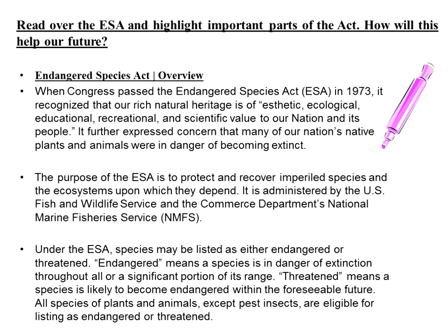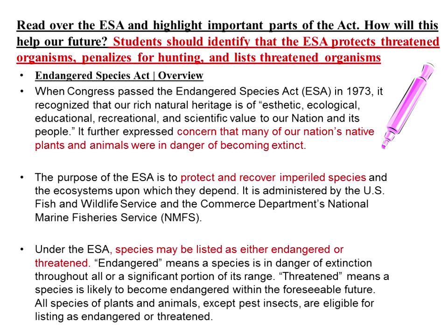The Endangered Species Act basically talks about how organisms are identified and placed on lists to be protected. You should be able to identify that the Endangered Species Act will protect threatened organisms, provides penalties for hunting or disturbing those protected organisms, and provides a list of endangered, threatened, and at-risk organisms.